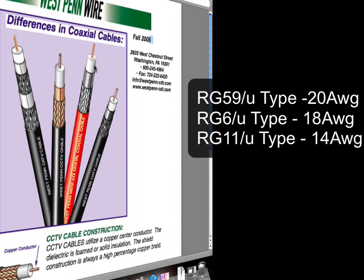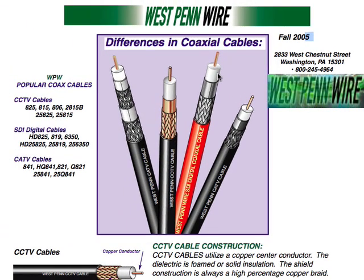Now these RG designations are all types — RG-59 type, for example. The RG radio guide or radio grade is an old military spec that was created back in the 1950s. These are a type of design similar to those early coaxial cables. So when you're specifying an RG cable, such as RG-6, we have to make sure what application it goes into. RG-6 can be a CCTV, a CATV, or a digital cable design.